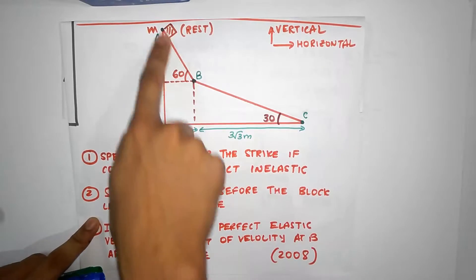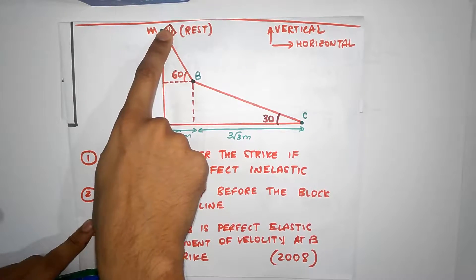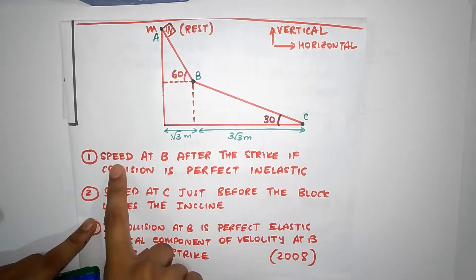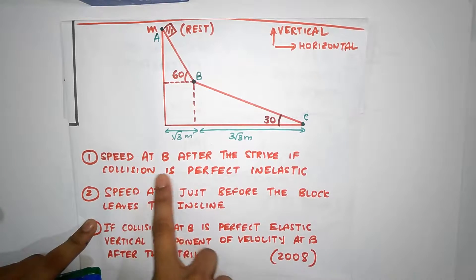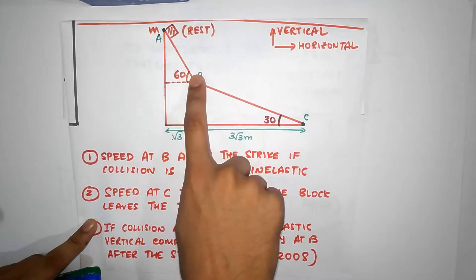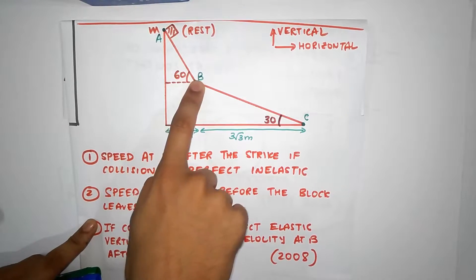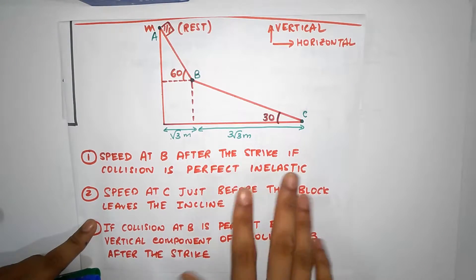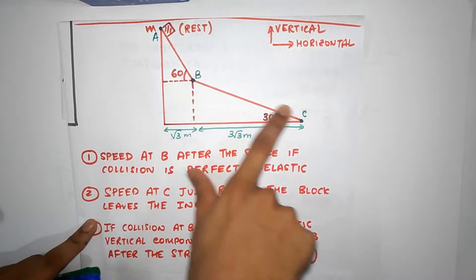We have a plank over a shear and the object is released from rest. It's going to bang over the shear and start moving. The question is: what would be the speed after the strike if the collision is perfectly inelastic? So this thing is going to go and bang over the shear, and it's given that the collision is perfectly inelastic. What's going to be the speed?